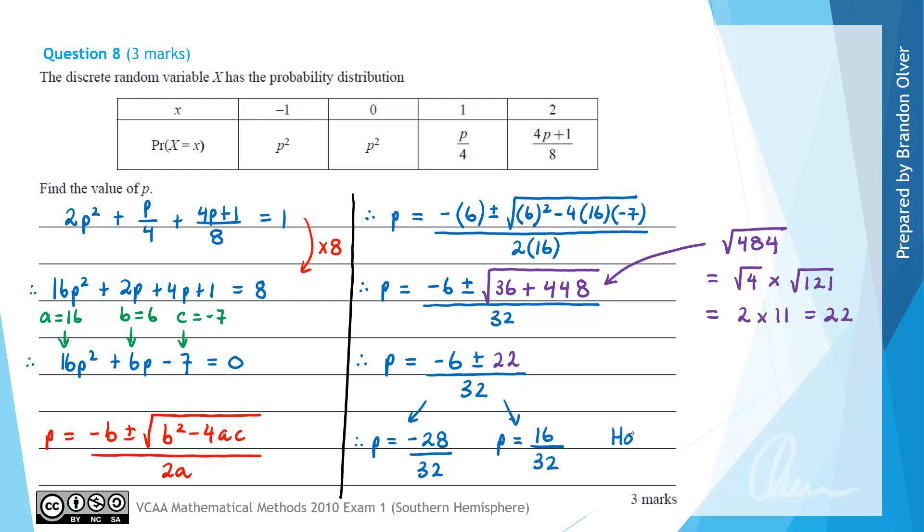However, as we're dealing with a probability distribution, we know that all probabilities must be 0 or greater than 0, but also less than 1. And up here we have p divided by 4, so we need p divided by 4 to be greater than 0, which means that p must be greater than 0. So if we know p is greater than 0, the only value of p that we can have is going to be 16 on 32, which is a half. So that is the answer for this question.